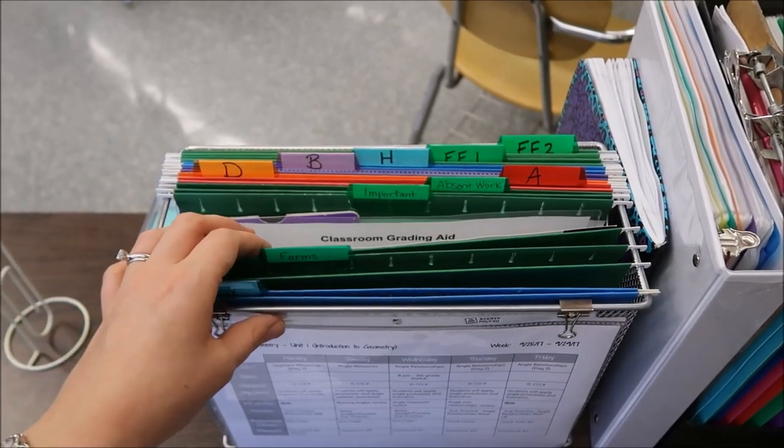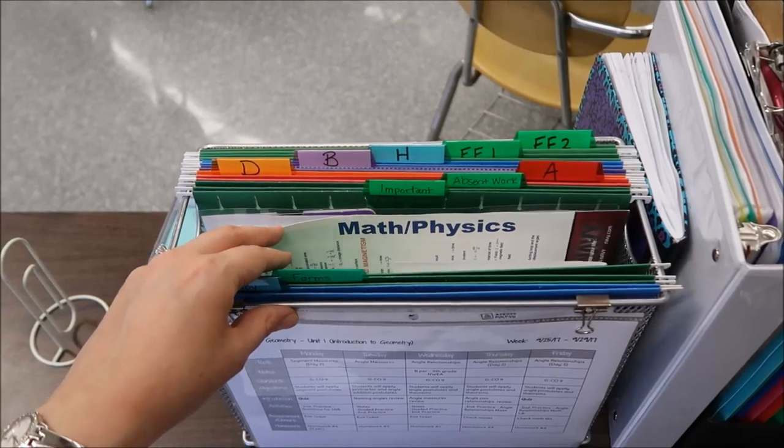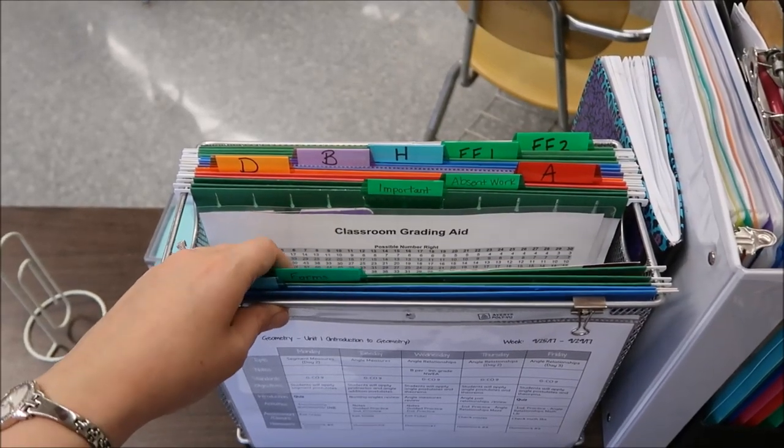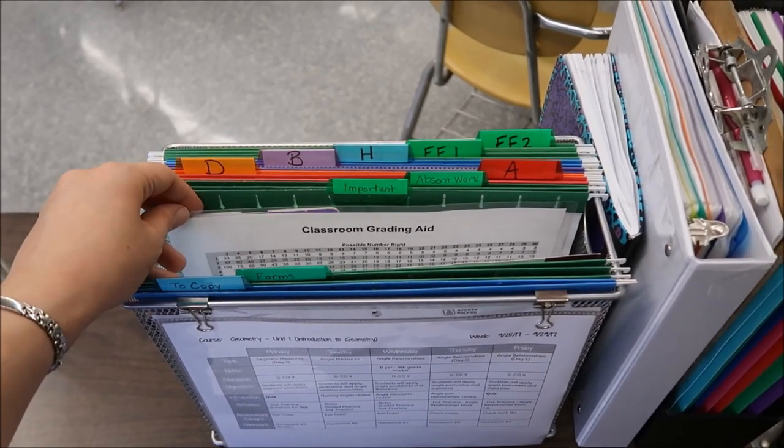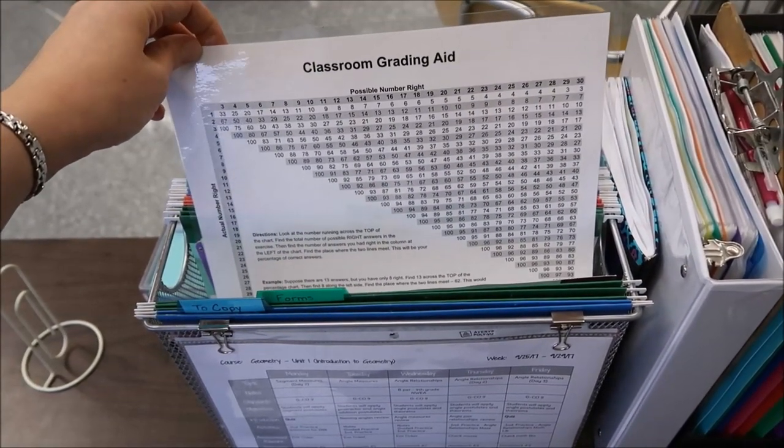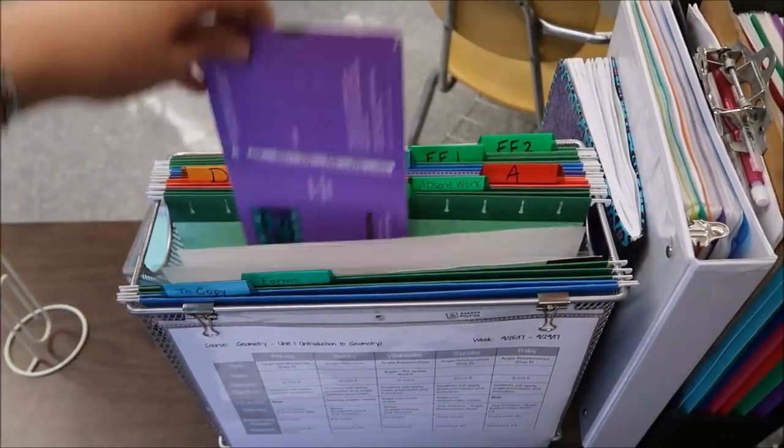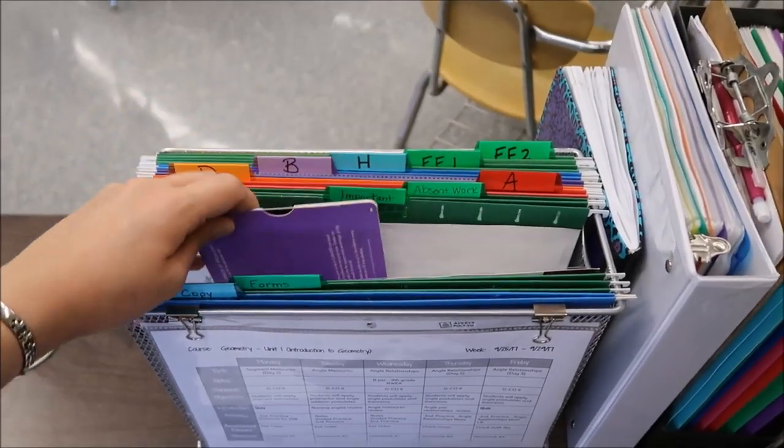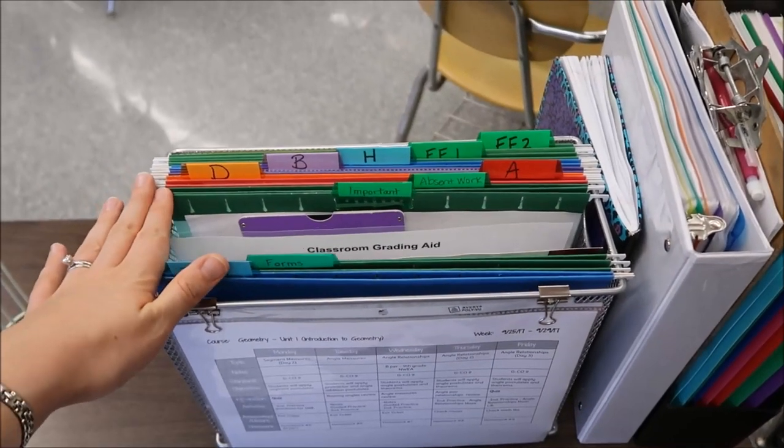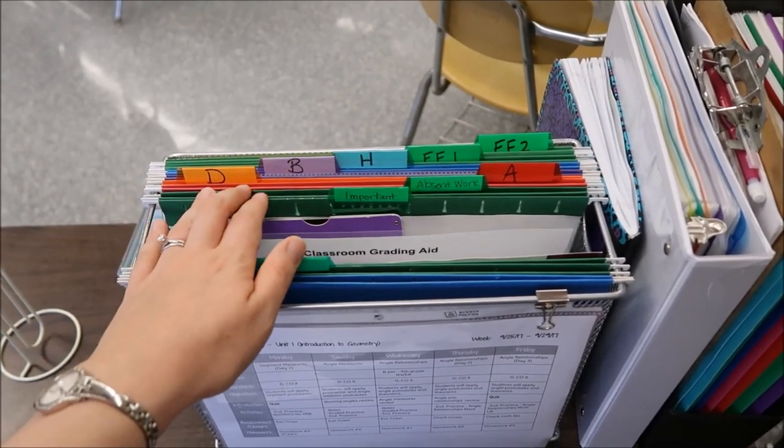My next folder is one that I've just labeled important and there's a lot of random things in here. I have a math and physics formula card. I have menus. I have the two-hour delay schedule. I have this grading aid that was provided to me from the 40-hour teacher workweek club. But I also keep my easy grader in here. So important kind of became a dumping ground for anything that I wanted to keep handy but didn't really have a place to put.